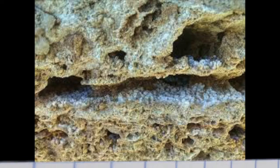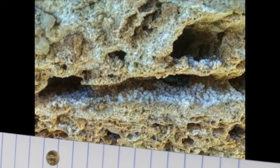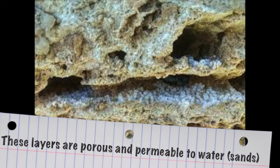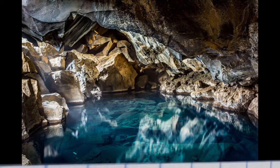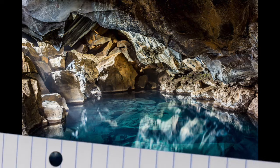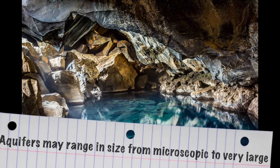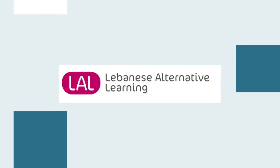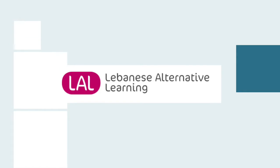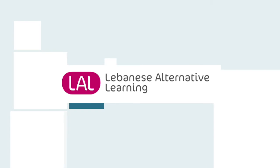These layers are made of porous and permeable rocks, which means that water can pass through them. Often, people think aquifers are extremely large, continuous underground pools. And while this is true for some, aquifers can actually range in size from microscopic to very large caverns.